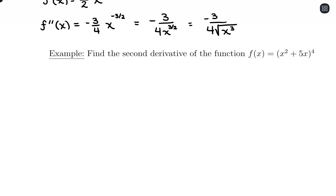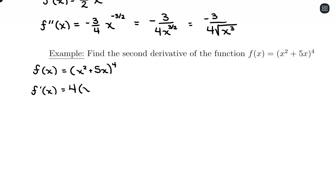Our next function is x squared plus 5x, all raised to the fourth power. We're going to have chain rule here with our first derivative. So f of x equals (x squared plus 5x) to the fourth power. For the first derivative, the outside function is the exponent of 4, so I bring that down, keep the inside function x squared plus 5x the same, and the new exponent is 3. Then we multiply by the derivative of the inside, which is 2x plus 5.